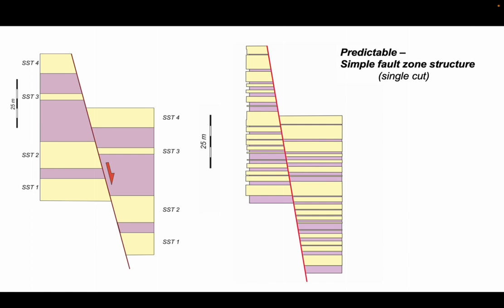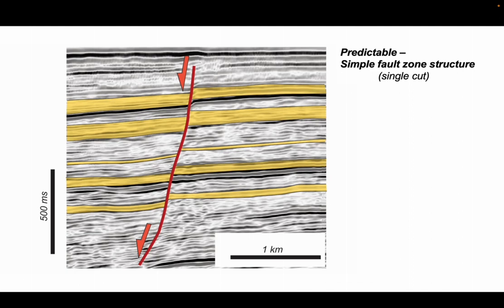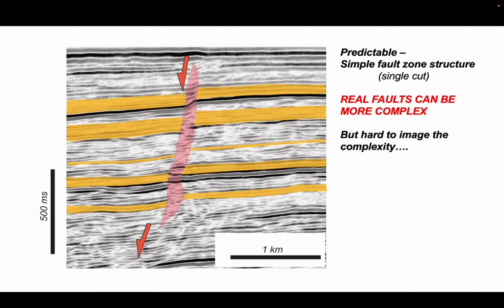These juxtaposition illustrations are very powerful tools, but they're assuming simple fault zone structure. In other words, a single cut through our stratigraphy. And that's how seismic imagery is commonly interpreted, with the fault just shown as a single line. Real faults could be much more complicated, but it's hard to image this complexity on seismic sections. Where do we want to put the fault through that zone there? What's the impact of having a more complicated fault zone structure?